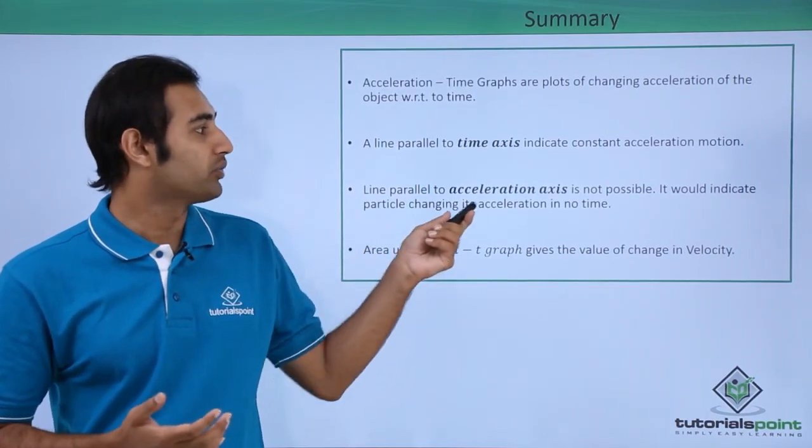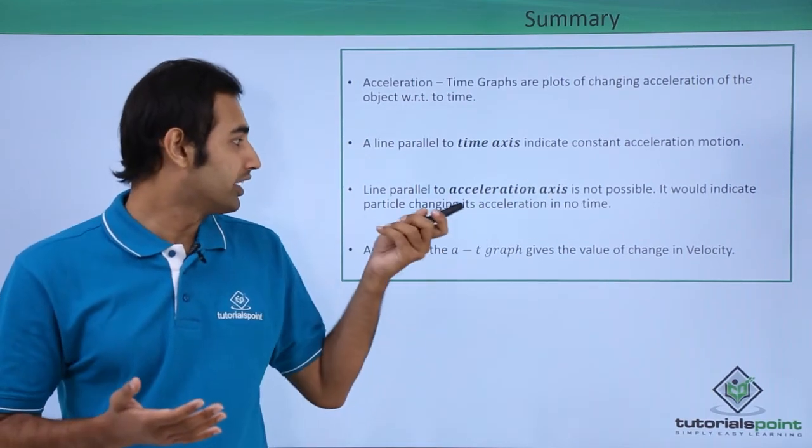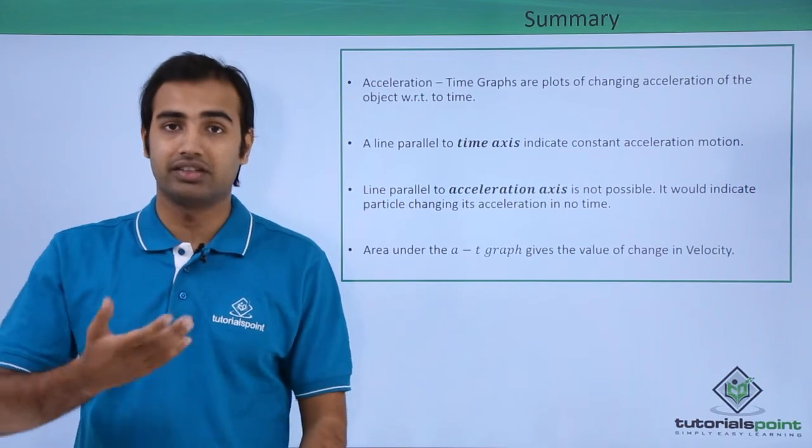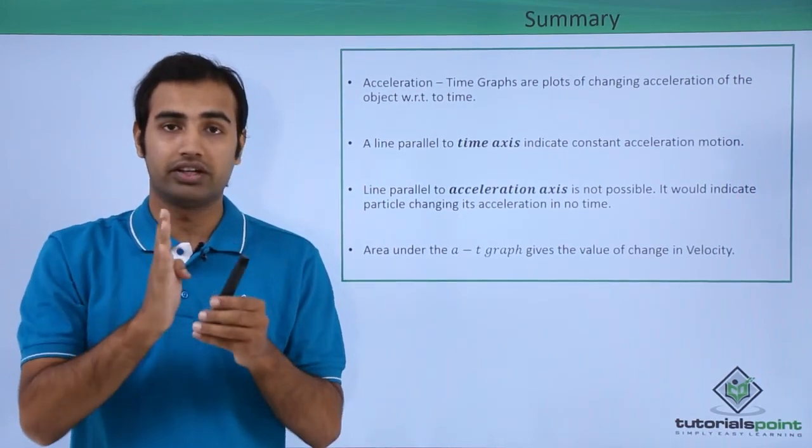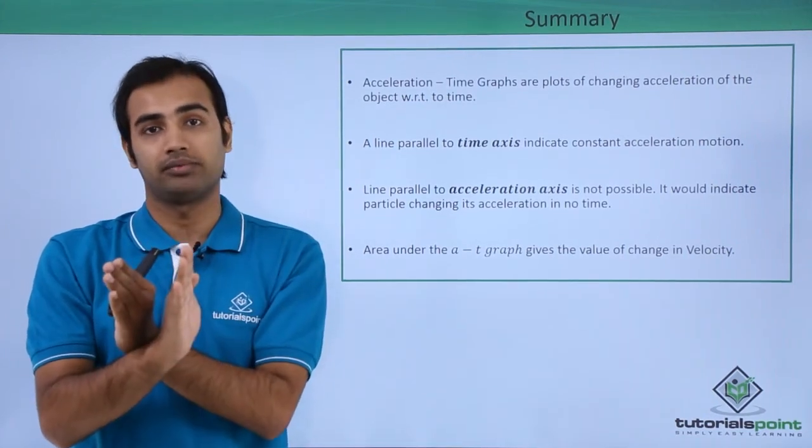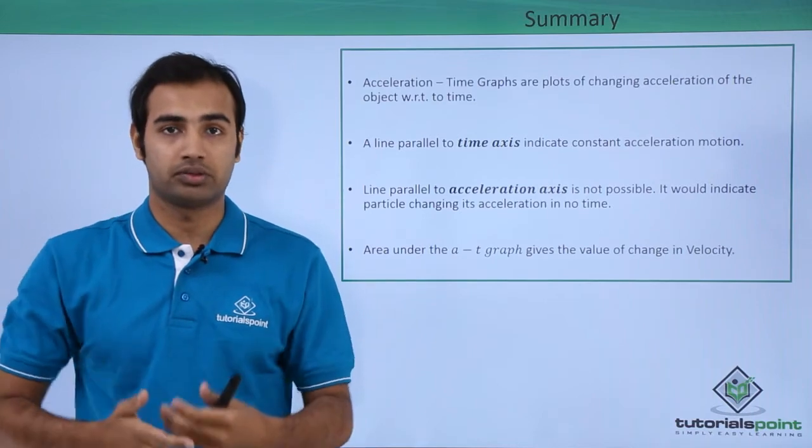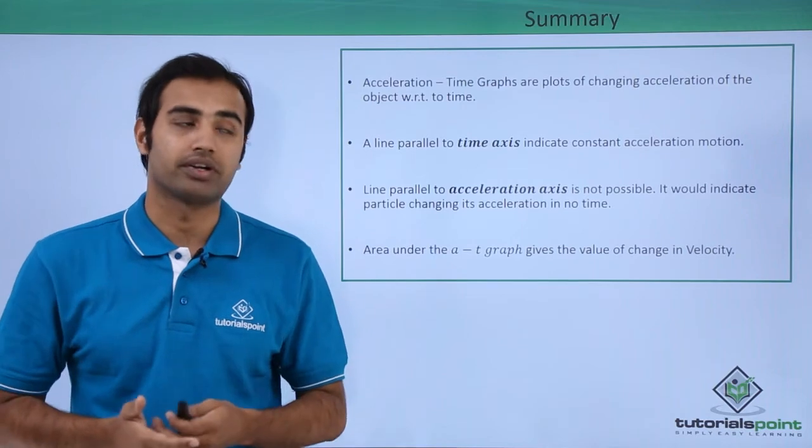Next, a line parallel to acceleration axis is not possible, because it would indicate the particle is changing its acceleration in no time. Which means that if I have a line parallel to y-axis, vertically upwards, it will indicate that the value of acceleration changed without any change in time. But in reality we know it's not possible, because for any physical phenomena to happen, some amount of time has to be clearly expended.